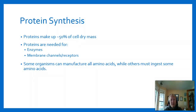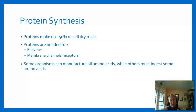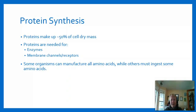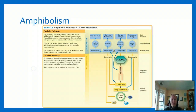Another big area is protein synthesis. Proteins make up fifty percent of the dry mass of cells, meaning the cell needs a lot of proteins and needs to replace proteins that are worn out, broken, or need to be replaced. The main proteins we discuss are enzymes and membrane channels and receptors. Some organisms can manufacture all of the amino acids, while others have to ingest essential amino acids because they can't create all 20 amino acids themselves.